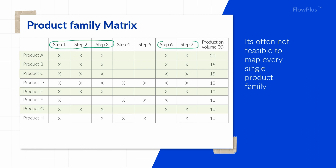This means when mapping the value stream, steps one, two, three, six and seven will be mapped, and steps four and five won't be mapped.